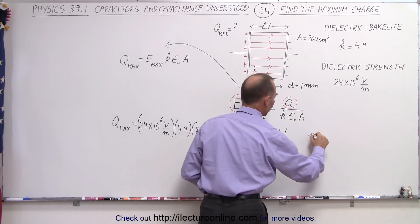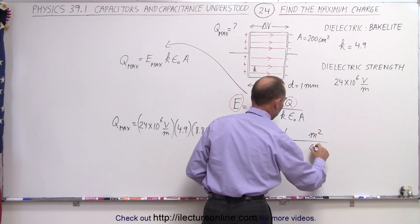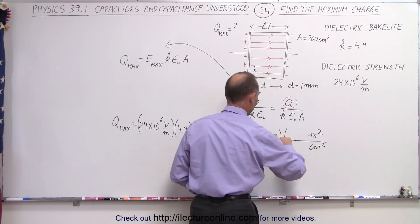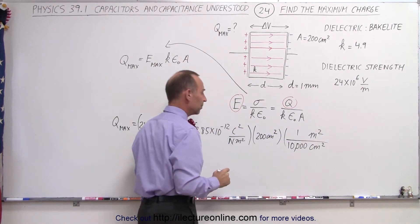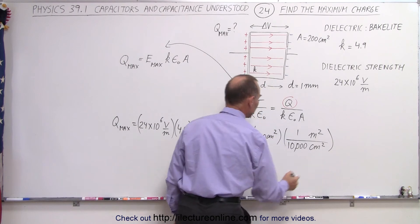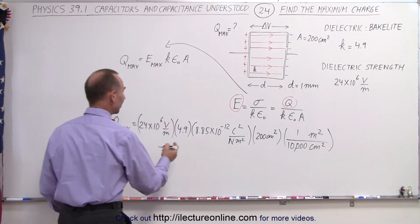Of course, we have to convert that to meters squared. That's a square right here. So that would be 1 over 10,000. There's 10,000 square centimeters in a square meter. And that's it, nothing in the denominator.